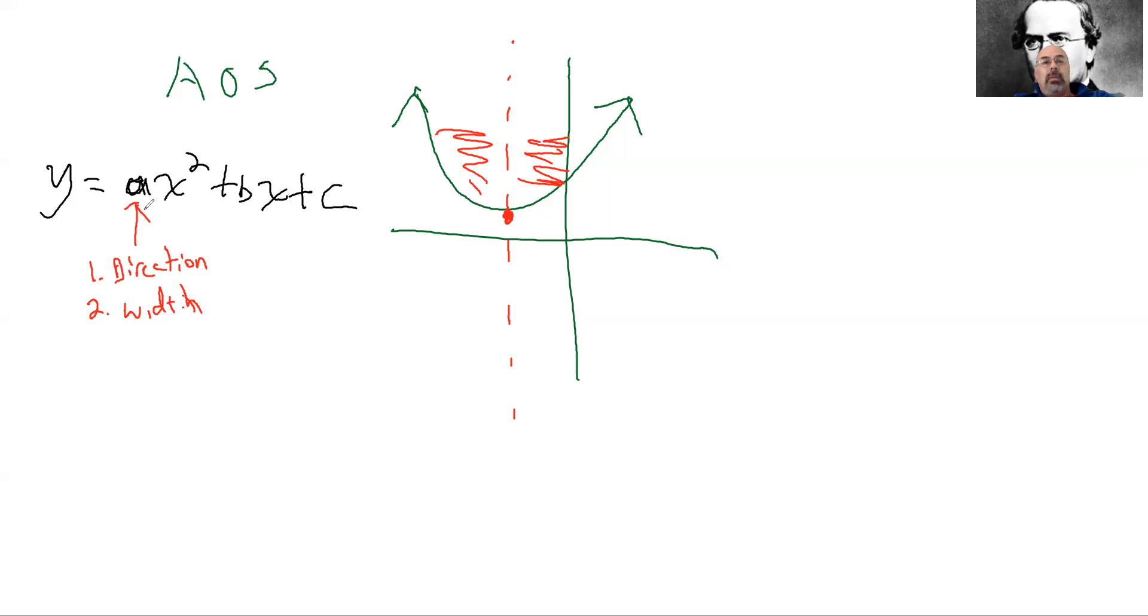Then we talked about c. We didn't talk about b at all yet, right? We talked about c, and c is going to be the y shift. All right, that's going to tell me how far up or down my parabola is going to go.